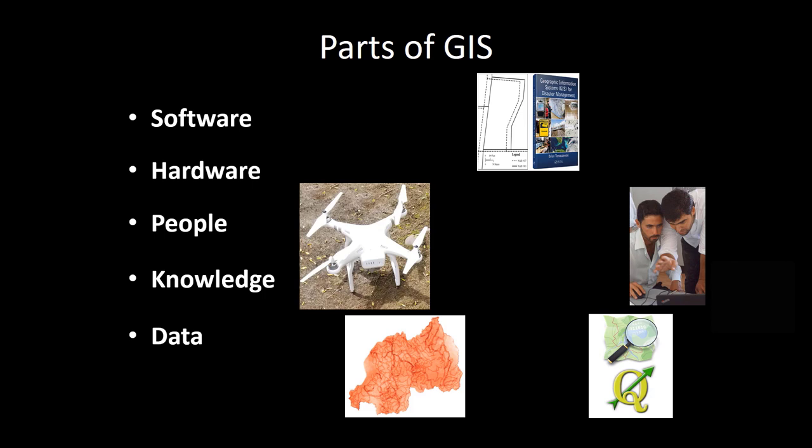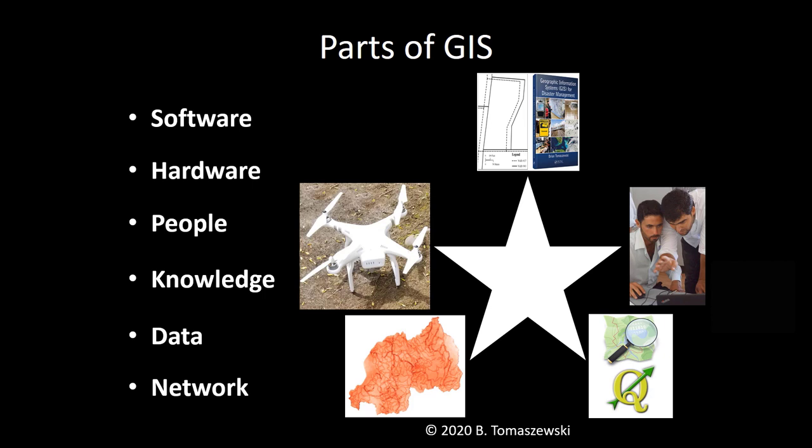Data, which will always be the most important component of a GIS. And finally, the network. The network can be considered the element that connects all the other parts together. For example, the internet that connects people to GIS data websites, or connecting GIS software with web-based data services, or social networks that connect people who use GIS to one another through things like GIS user communities or even the YouTube community.